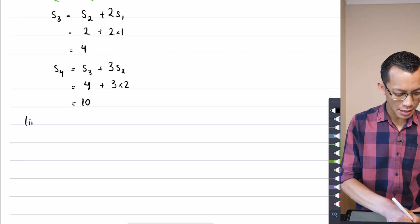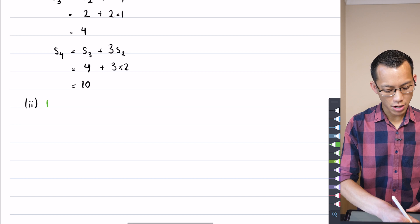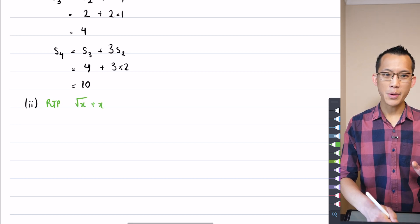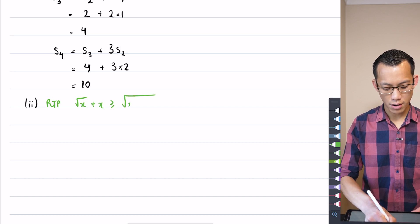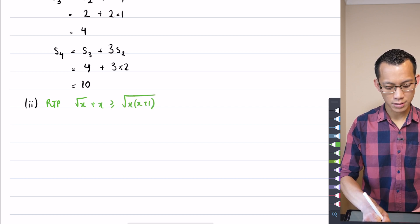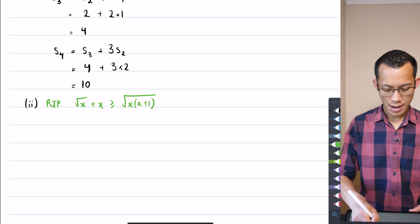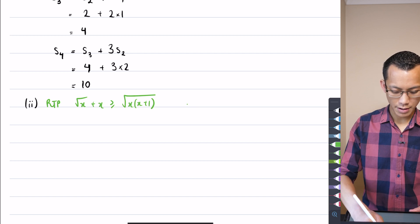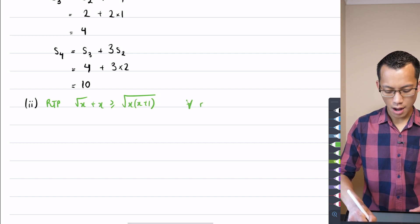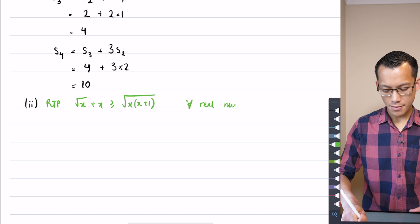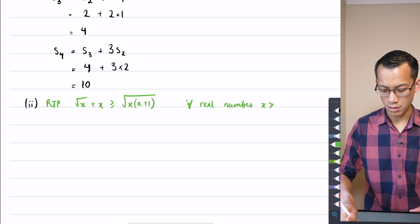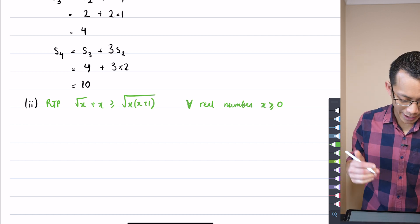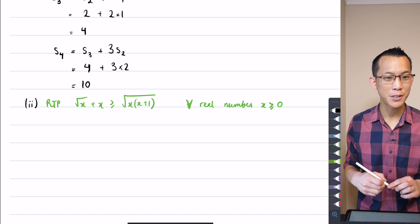Now part two then says, what are we required to prove? We need to show that the square root of (x + x) is going to be greater than or equal to the square root of x(x+1). And the domain restriction is for all real numbers x, and I think it's just strictly, no, it's not actually strictly positive, you can't include zero. Because of course we can, once you put x equals zero, it's just a trivial result.